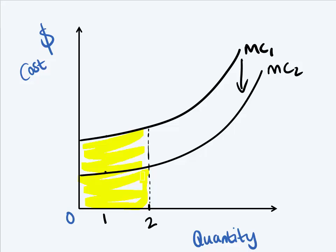But now the technology improved, the marginal cost curve shifted down, and now my total cost of producing two units would be this area over here, only this area. So meaning this whole area over here.